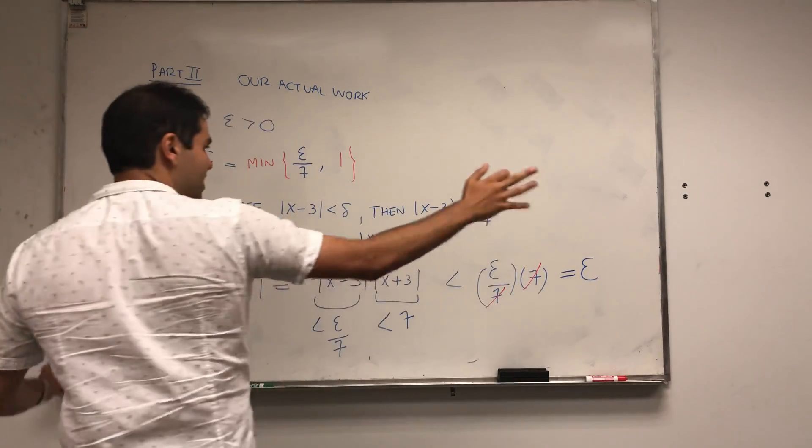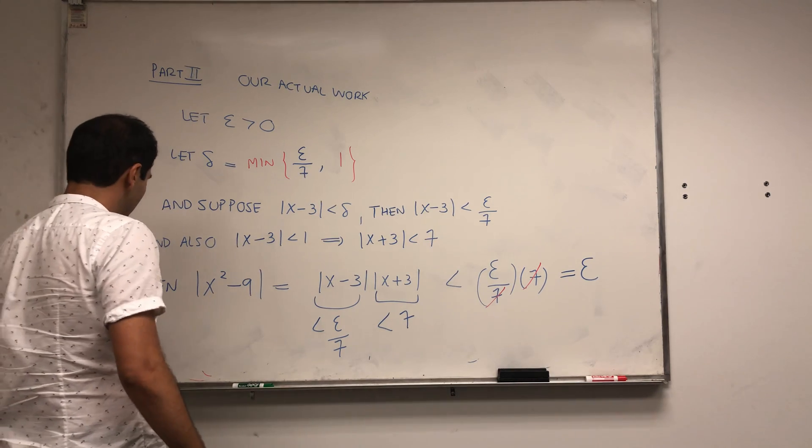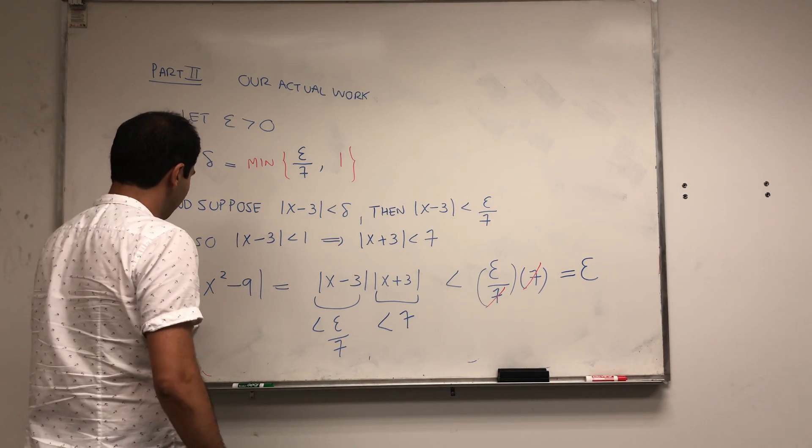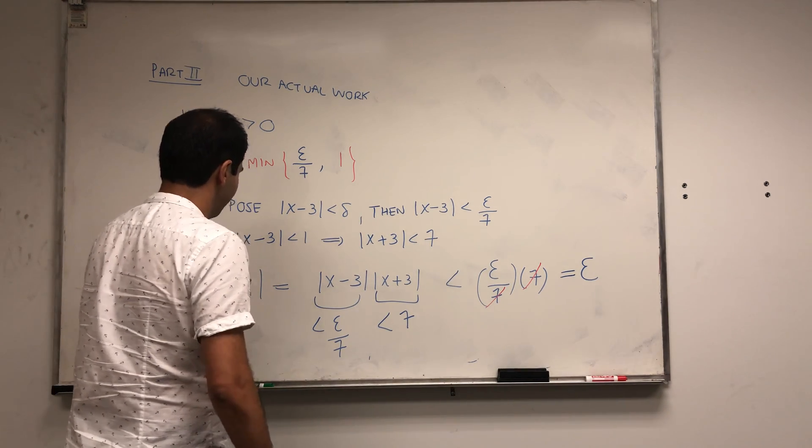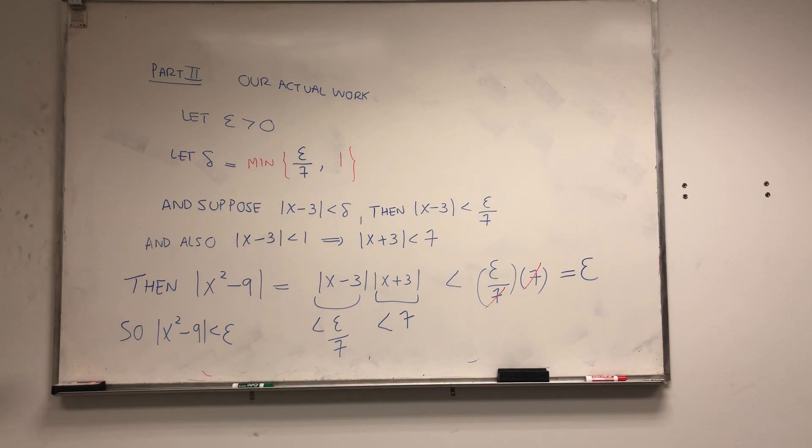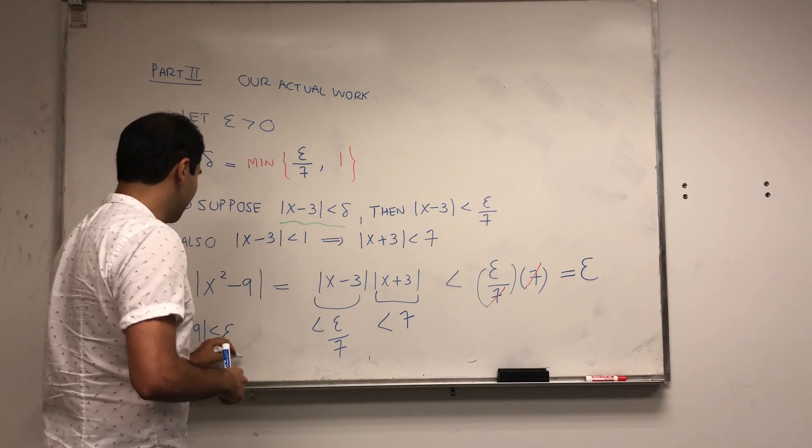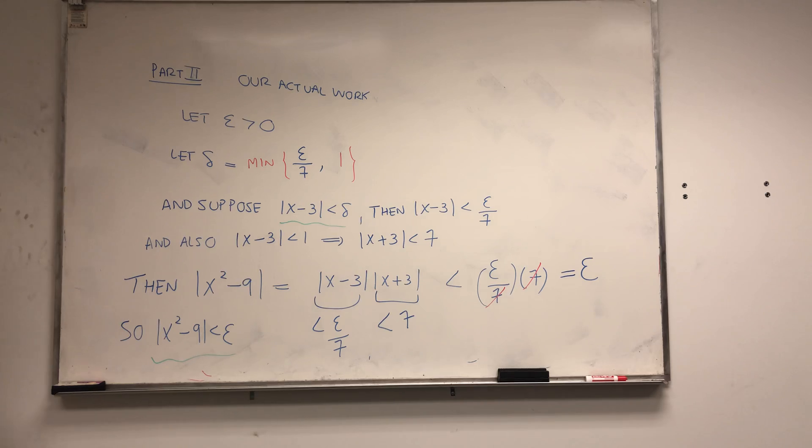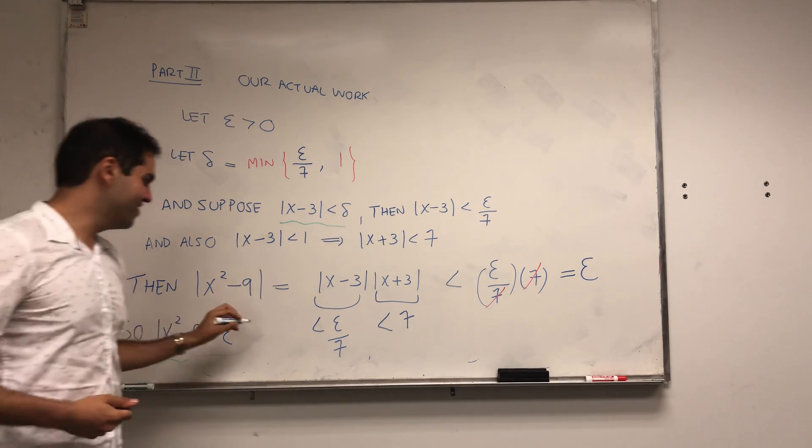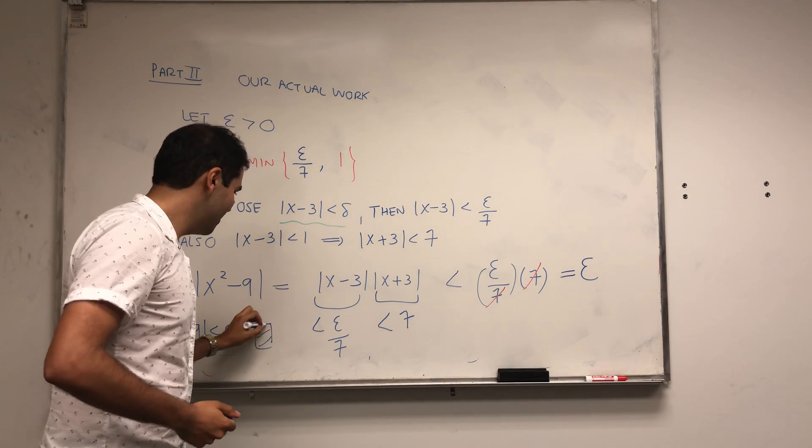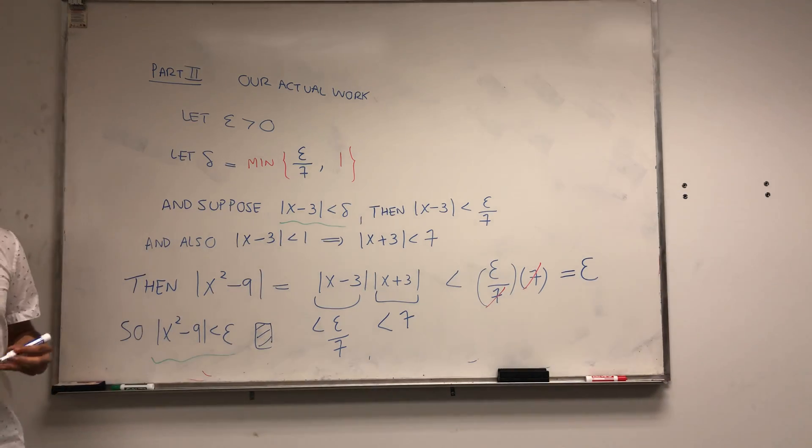Looking at this whole thing, x squared minus 9 is less than epsilon. What have you shown? You've shown that if x minus 3 is less than delta, then x squared minus 9 is less than epsilon. You're done, and you can go home happy.